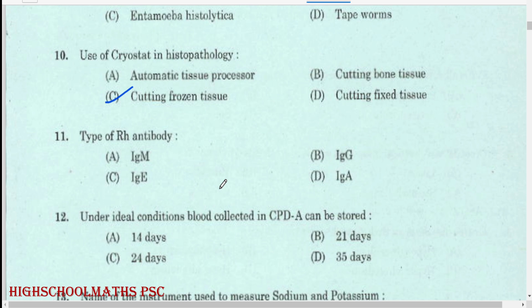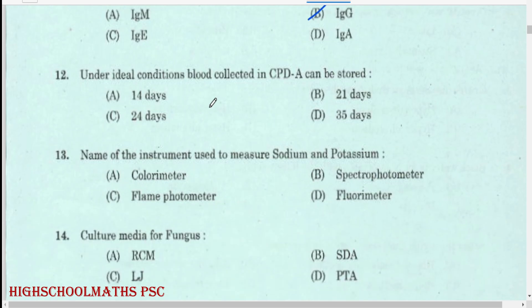Type of Rh antibody: Immunoglobulin G. Under ideal conditions, blood collected in CPD-A can be stored for 35 days.